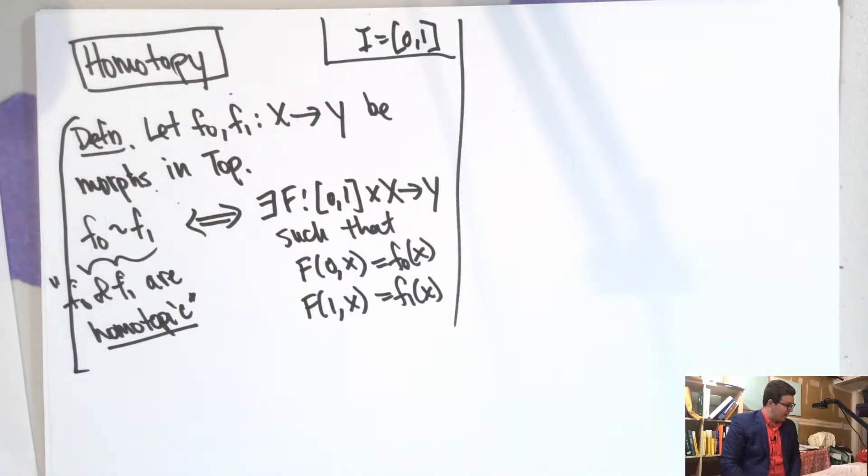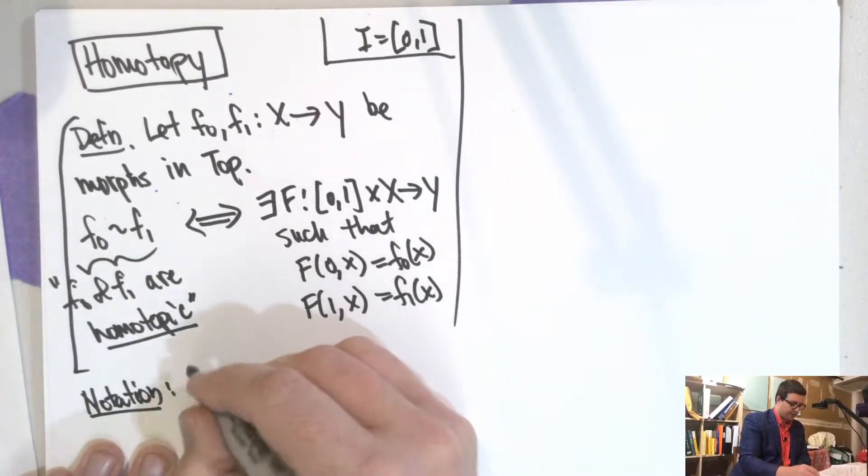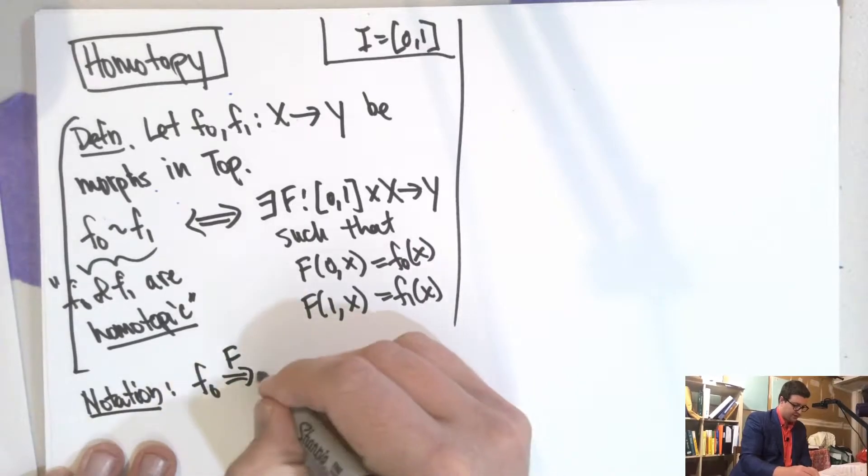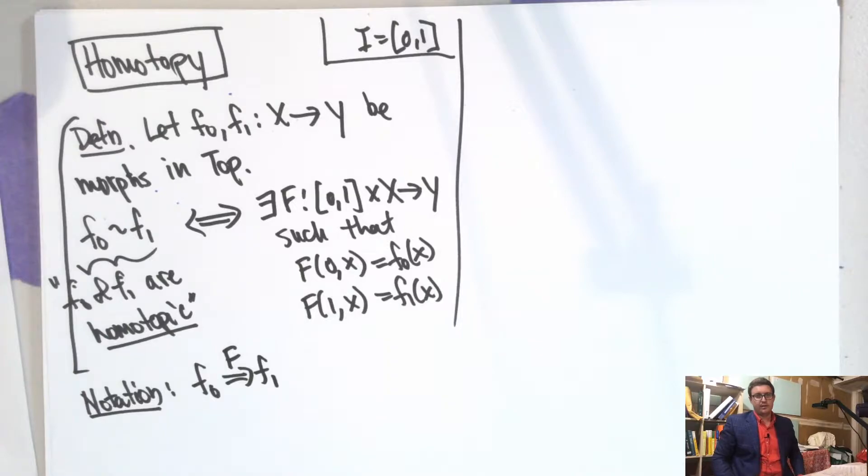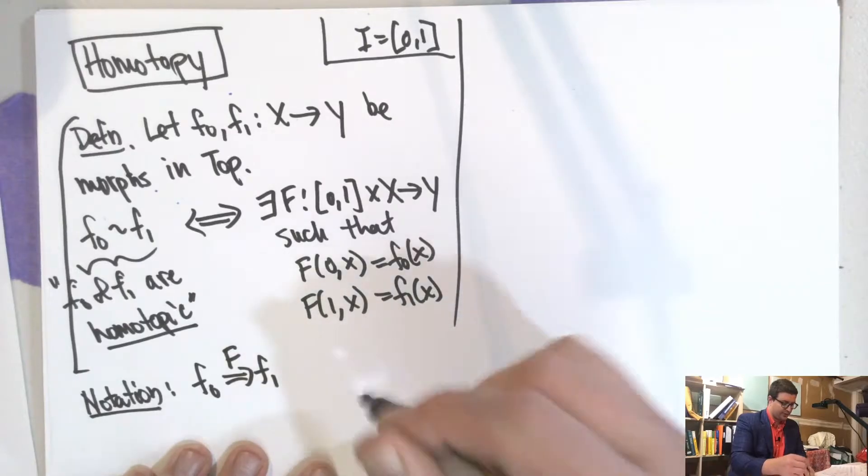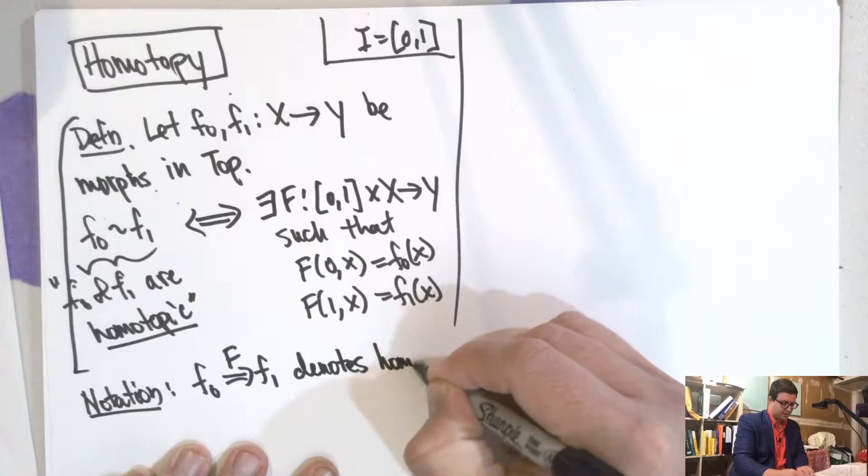So, there's some notation that we want to introduce. So F0 like this. This is a morphism of morphisms. I think I've mentioned two categories in the office hours portion of this course. This just denotes a homotopy.